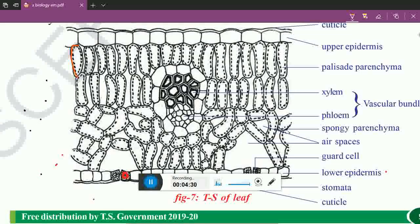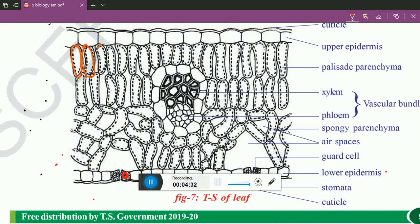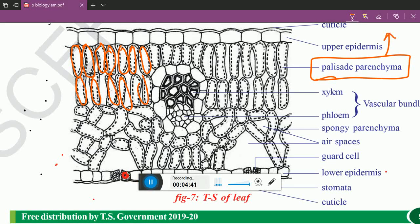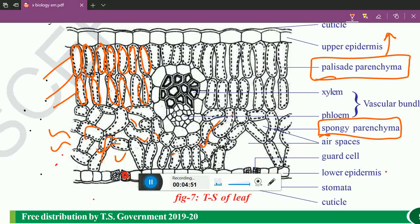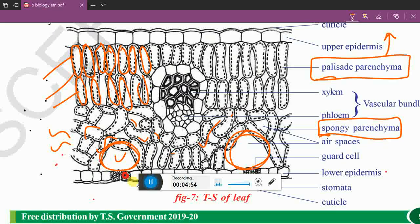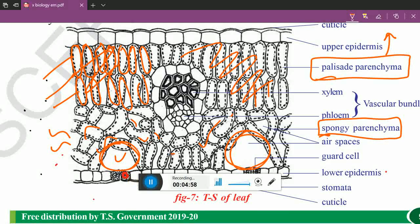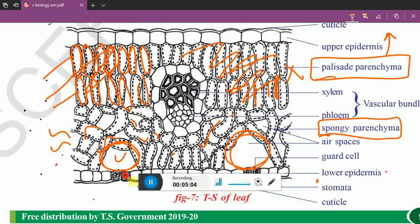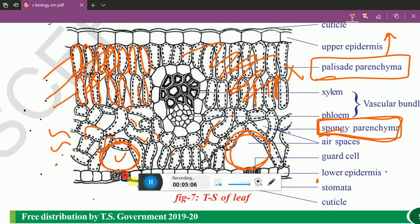Just below to that, you can see still elongated double layer - palisade parenchyma, only in the upper region. Lower region, we can see spongy parenchyma. They are wavy pattern or irregular in shape, leaving air spaces. These won't leave any air spaces. In case of spongy parenchyma, air spaces are present. That's why it will be spongy in nature.